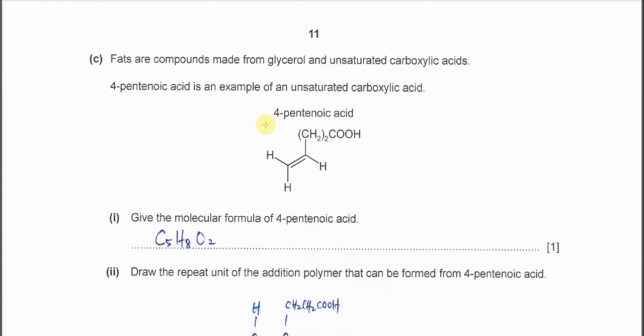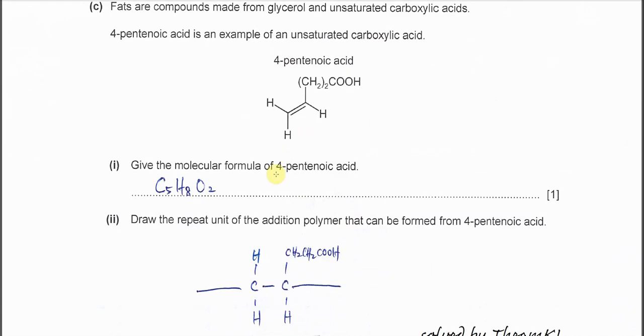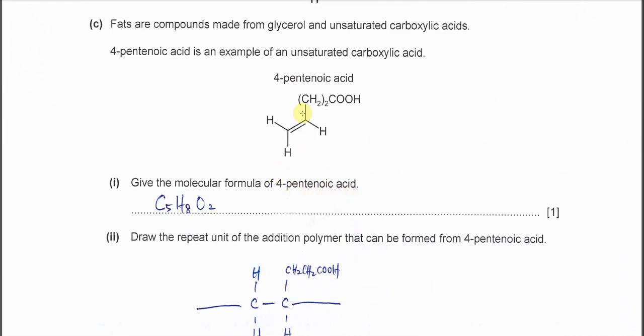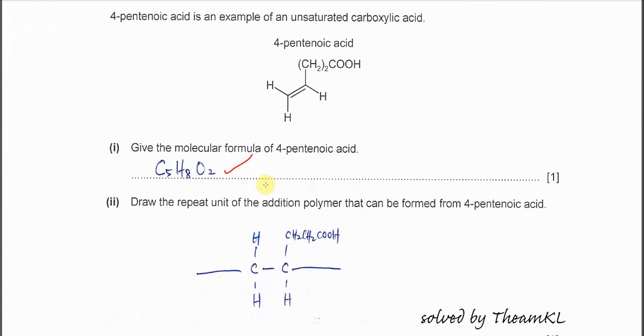Part C: We have this compound 4-pentenoic acid. Give the molecular formula for this 4-pentenoic acid. Very easy, just count the carbon number - it's 5 carbon: 1, 2, 3, 4, 5. Hydrogen is 1, 2, 3, here is 4, then another one, so it's 8. Oxygen is 2. So you get C5H8O2. Draw the repeat unit of the addition polymer formed by these monomers. Very easy, just open up this double bond and just put the tails there. So you get this repeat unit.